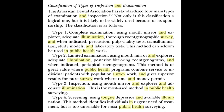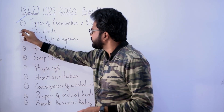Type 2: limited examination using mouth mirror, explorer, adequate illumination, and the rest of the criteria. Type 3: inspection using mouth mirror, explorer, and adequate illumination — the most used method in public health surveying; make a note of this point. Type 4: screening using tongue depressor and available illumination. This method identifies individuals in urgent need of treatment but is too unreliable for most public health surveying. This information is from Principles of Dental Public Health by James Morse Dunning.